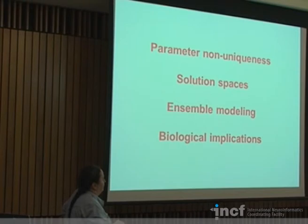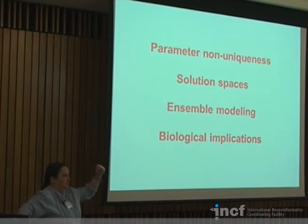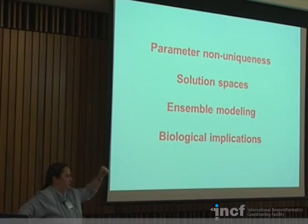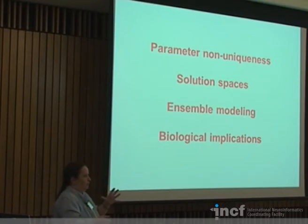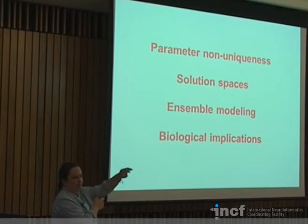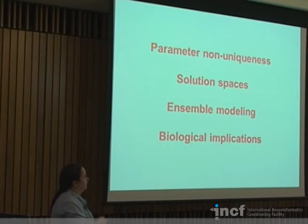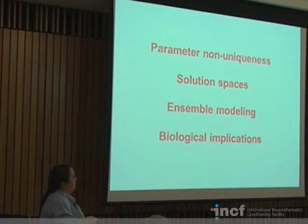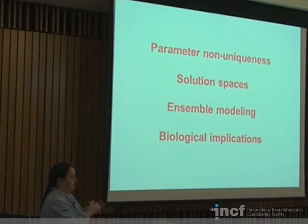The biological implication: if there were a unique solution — you must sit in exactly this parameter spot to generate a pyloric rhythm — that would make the system very brittle. Any small variation could kick it out of proper function. But if you have an entire solution space, that makes you much more robust. There may be directions where you can easily fall out of the solution space, but other directions where you can vary a parameter a lot and still produce a functional rhythm. This connects back to homeostasis discussed earlier — these systems have evolved to promote robustness, being non-unique in their parameters, able to do the same job in many different ways.